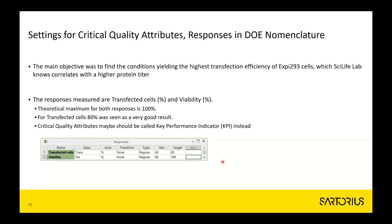The first thing you always have to define is the critical quality attributes — what you can measure, the responses. The main objective was to find conditions yielding the highest possible transfection efficiency of this cell type, which SciLife Lab knew would correlate with a higher protein titer. The responses measured were percentage of transfected cells and viability, with 80% seen as a very good result for transfected cells.